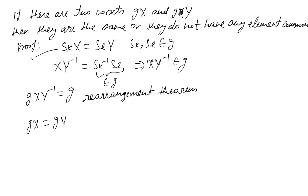So we started with the assumption that only one element is common and ended with GX equals GY, meaning both cosets have all the same elements. Therefore, either there are no elements common between the two cosets, or all of them are common. We'll talk about a few more definitions in the following lectures.